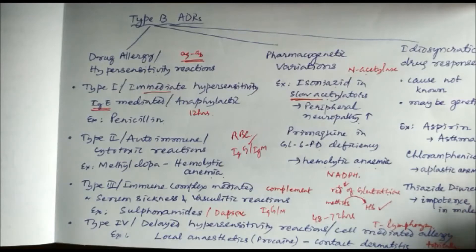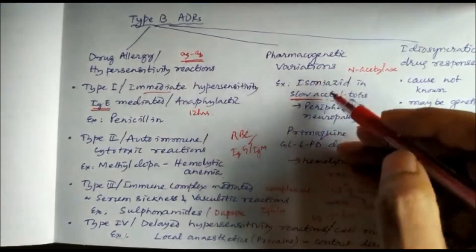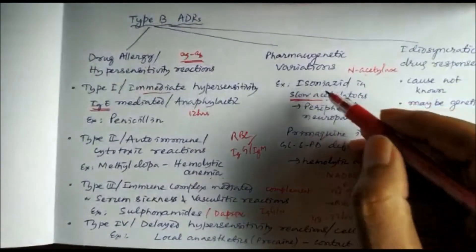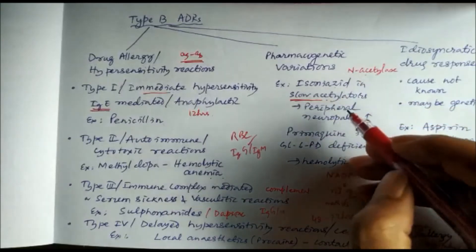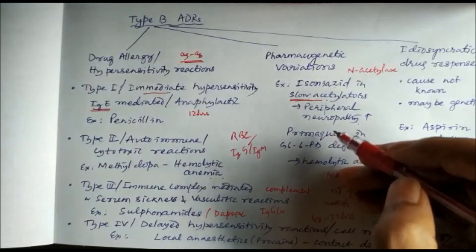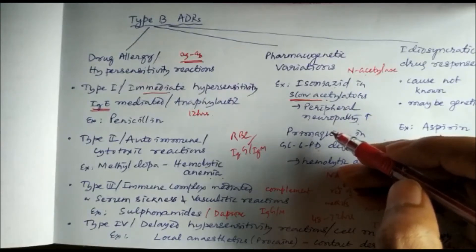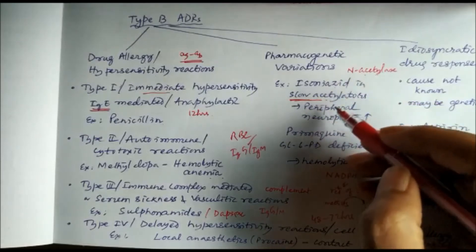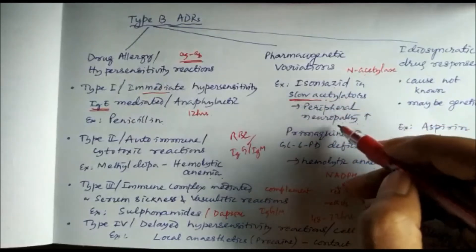Some examples of pharmacogenetic variations are isoniazid causing increased peripheral neuropathy in slow acetylators. As we know, isoniazid is an anti-tubercular drug metabolized by an acetylase or acetyltransferase. The world population can be divided into two groups: slow acetylators and fast acetylators. The fast acetylators are Eskimos and Japanese; the slow acetylators are Egyptians, Mediterranean Jews, and Swedish. The slow acetylators have less N-acetylase, so there is decreased metabolism of isoniazid, meaning increased risk of peripheral neuropathy in slow acetylators.